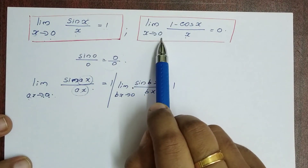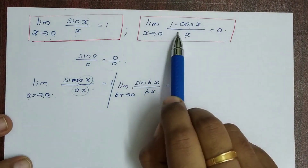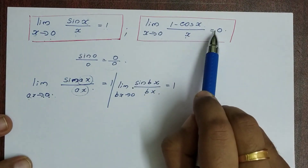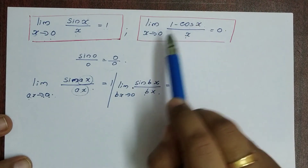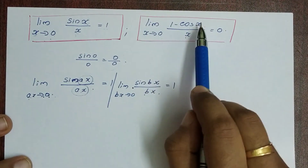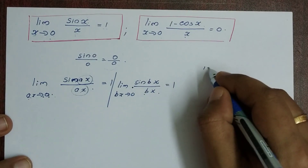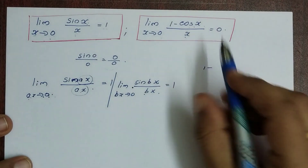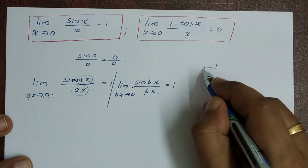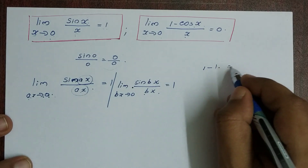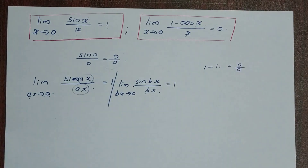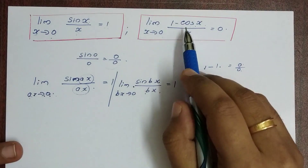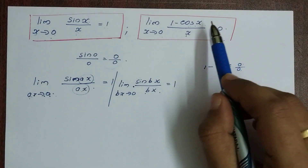Limit x tends to 0, 1 minus cos x divided by x is equal to 0. If we substitute x tends to 0 directly: 1 minus cos 0 equals 1 minus 1 equals 0. The denominator is also 0. So we get 0 by 0, which is not defined. So we need to solve this differently.